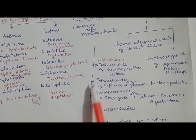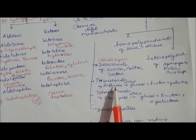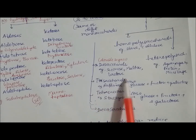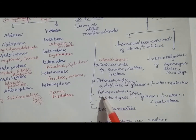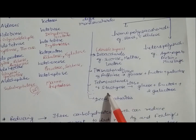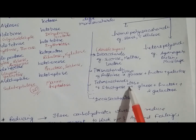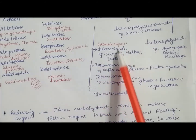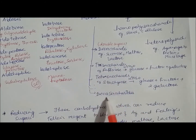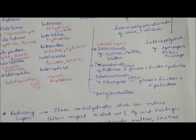Disaccharides are called double sugars — examples are sucrose, maltose, and lactose. Raffinose is a trisaccharide; on acidic hydrolysis it gives glucose, glucose, and galactose. Tetrasaccharides like stachyose on acidic hydrolysis give glucose, glucose, glucose, and two molecules of galactose. Oligosaccharides can have same or different units up to ten — those with ten are called decasaccharides.